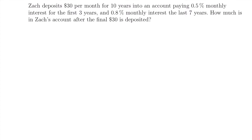For our next example, Zach deposits $30 per month for 10 years into an account paying 0.5% monthly interest for the first three years and 0.8% monthly interest for the last seven years. How much is in Zach's account after the final $30 is deposited? We're dealing with another series of payments — Zach is depositing $30 per month for a total of 10 years, so we need to keep in mind that this is a monthly payment. The tricky part is that he doesn't have a consistent interest rate: 0.5% monthly for the first three years, then it changes to 0.8% monthly for the last seven years.